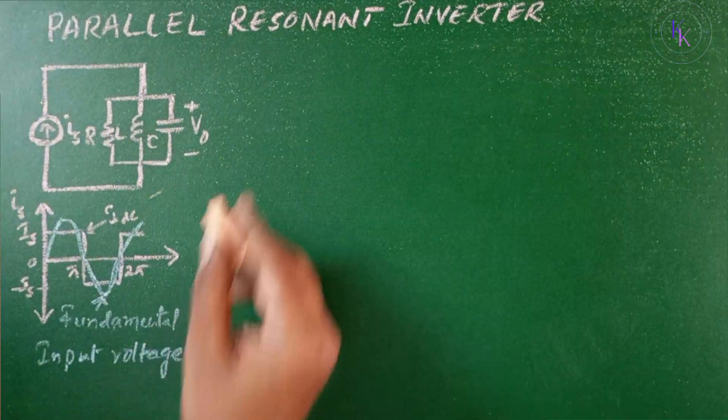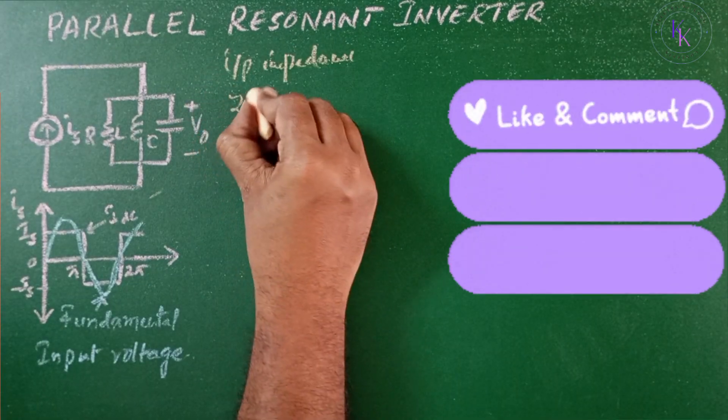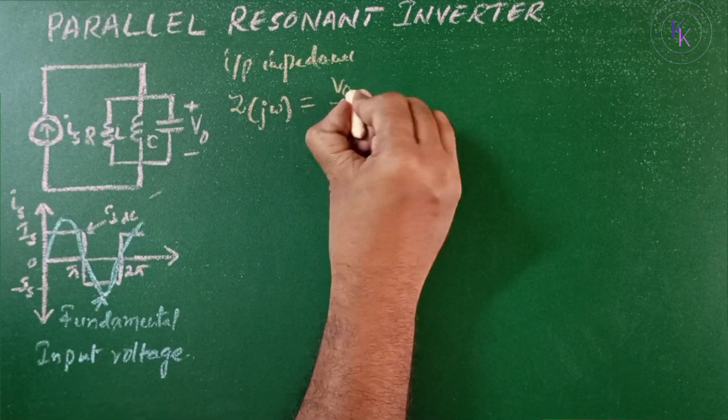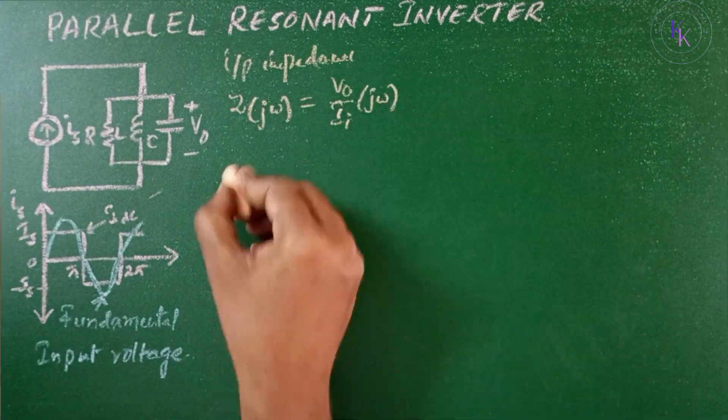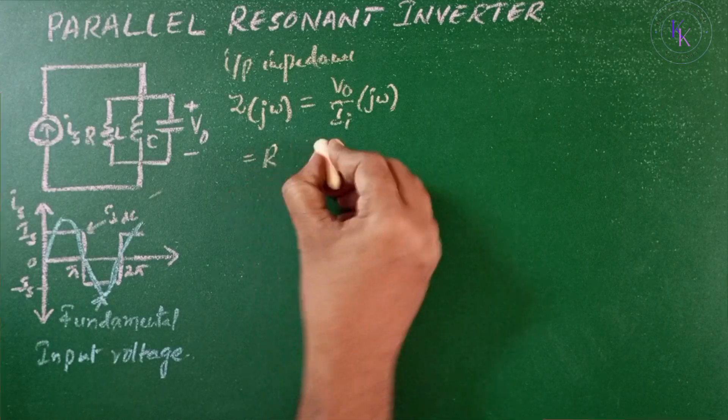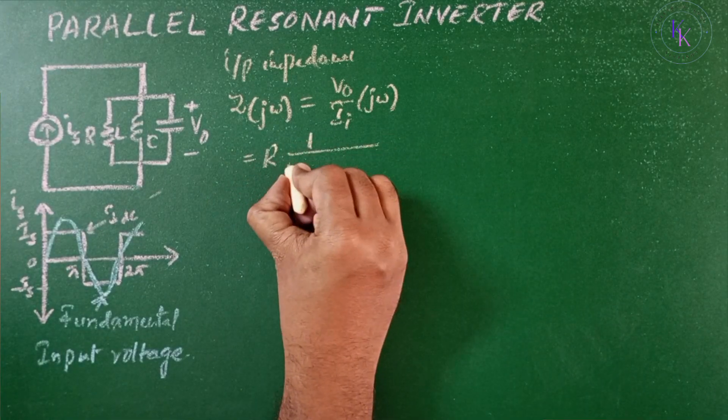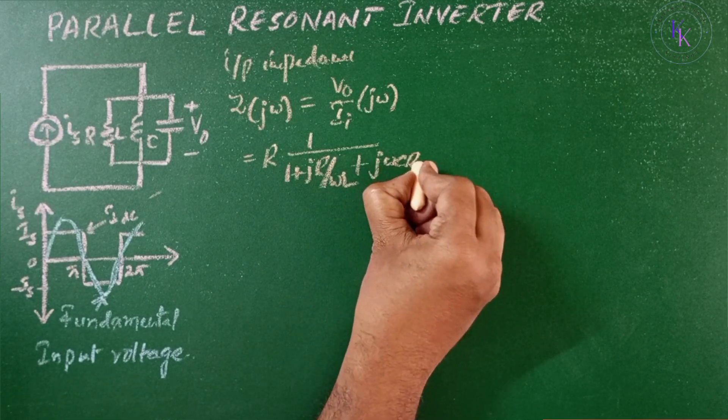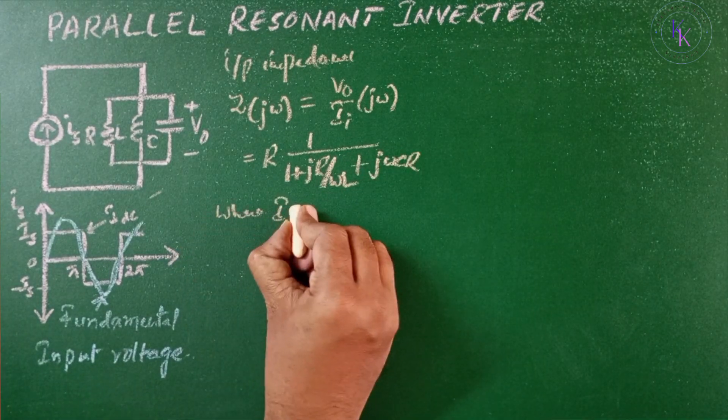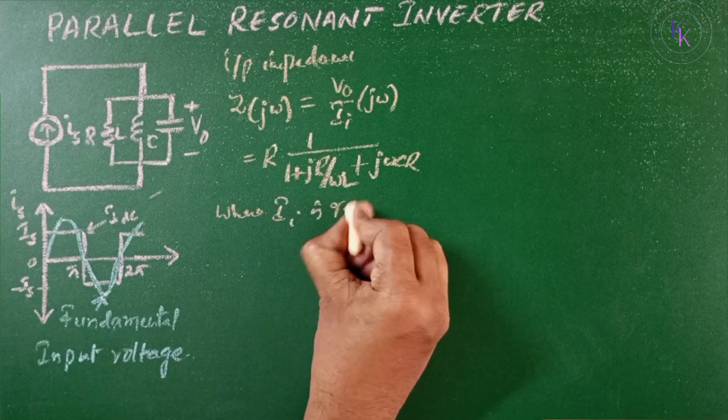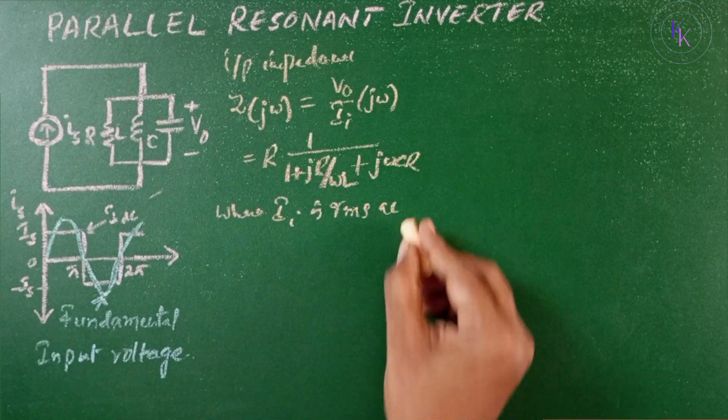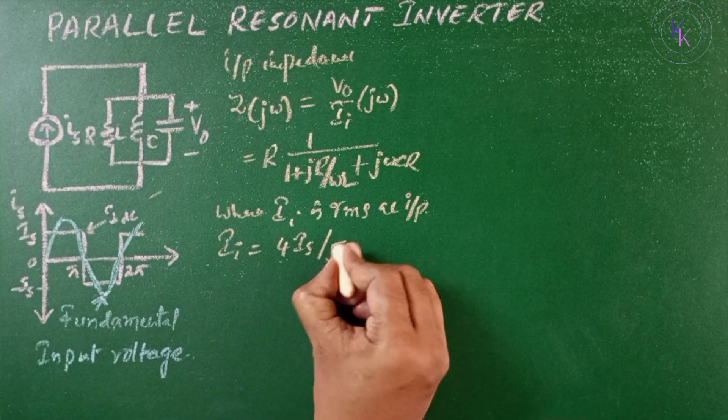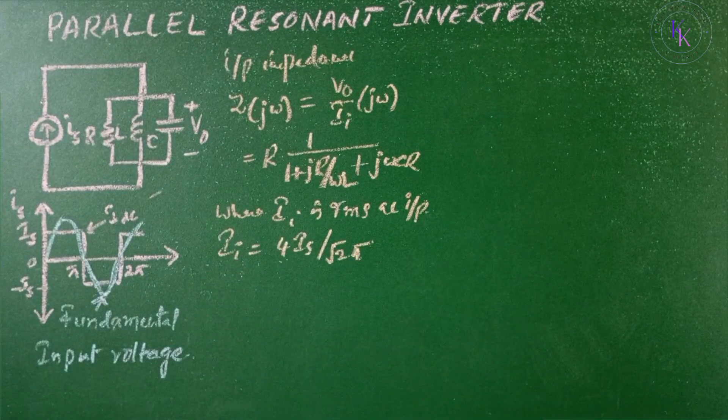Now the input impedance Z(jω) is given by V₀/I_input, which equals R/(1 + jR(1/ωL + ωC)). The RMS AC input current I equals 4Is/(π√2).